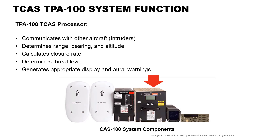When TCAS predicts that certain safe boundaries may be violated, it issues a traffic advisory (TA) to alert the crew that closing traffic is in the vicinity. If the intruder continues to close, TCAS issues a resolution advisory (RA) to obtain or maintain safe vertical separation between your aircraft and the intruder. TCAS then generates appropriate display and oral warnings.